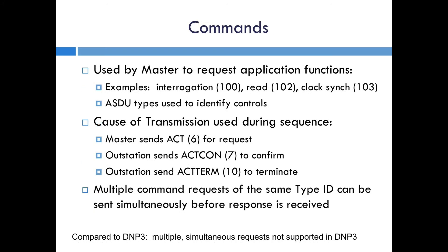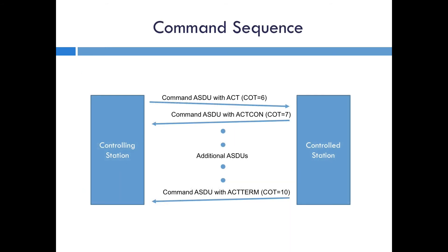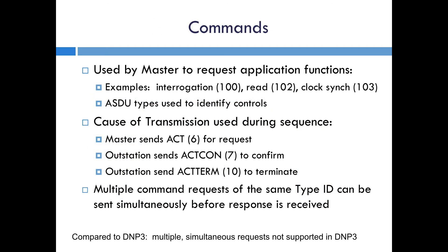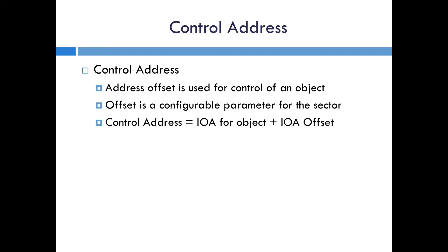The specification also describes controls. This is basically where the master is making a request for one of these application functions — interrogation, read, or sending a command — and it uses the ASDU type to identify what type of control it is. It also uses a few of the cause of transmissions: when the master sends a request it sends an activation of COT 6, when the outstation sends back a confirmation it's the ACT-CON which is COT 7, and then the outstation can send an ACT-TERM — COT 10 — to terminate that control. Also note that the specification allows multiple command requests of the same type ID to be sent simultaneously before a response is received, in contrast to DNP3 in which multiple simultaneous requests are not supported.